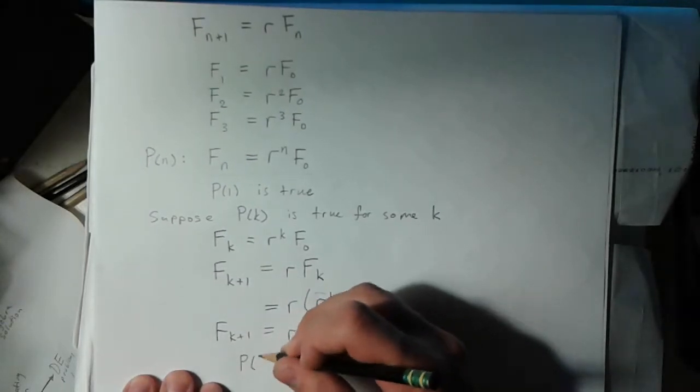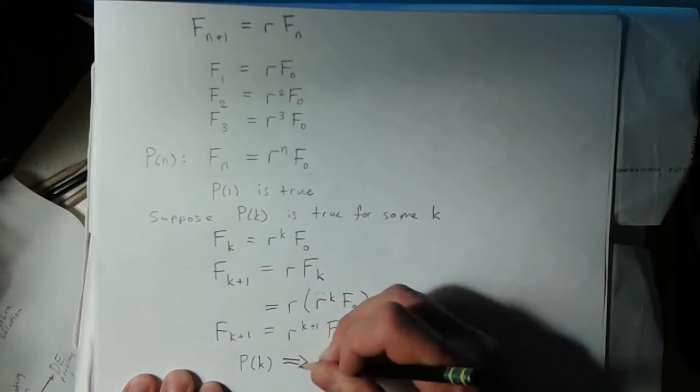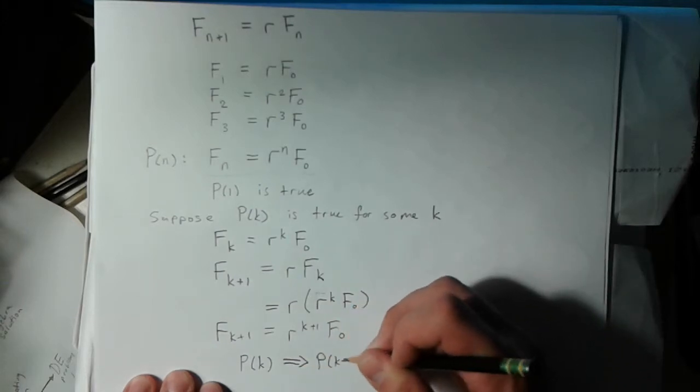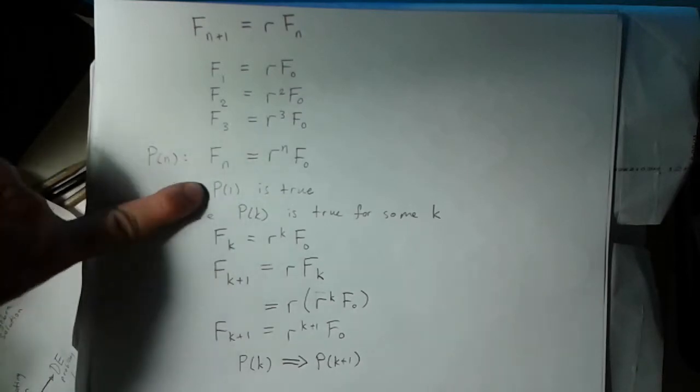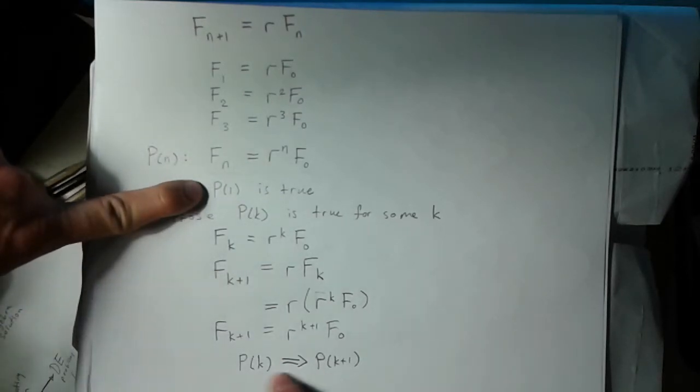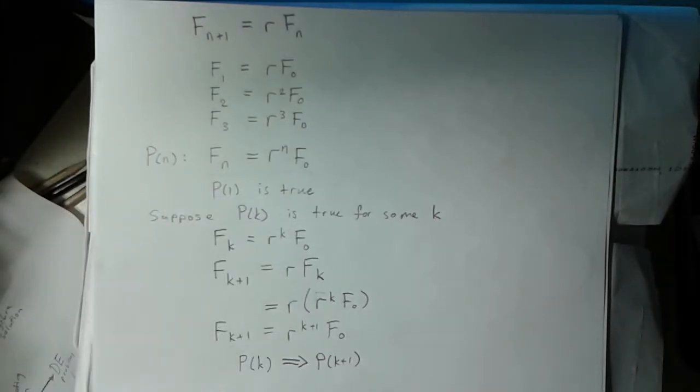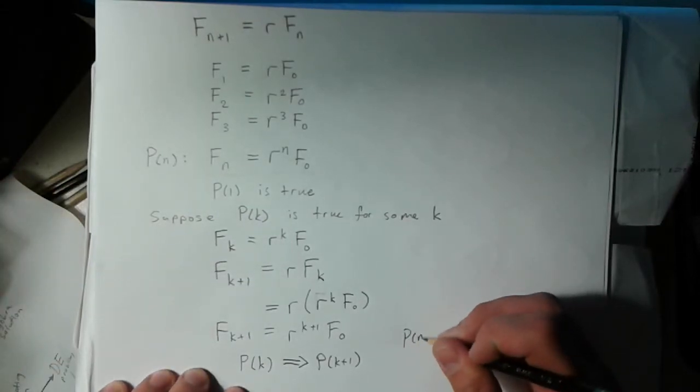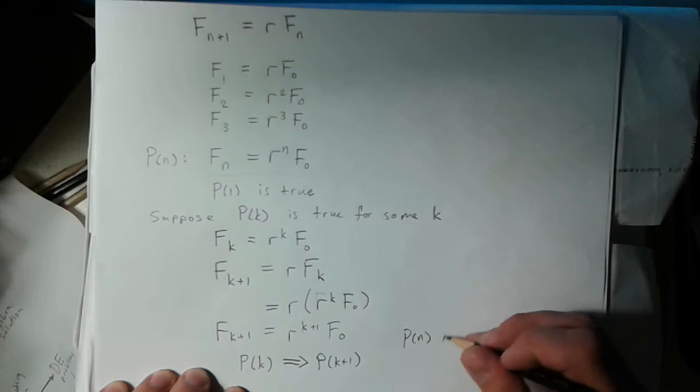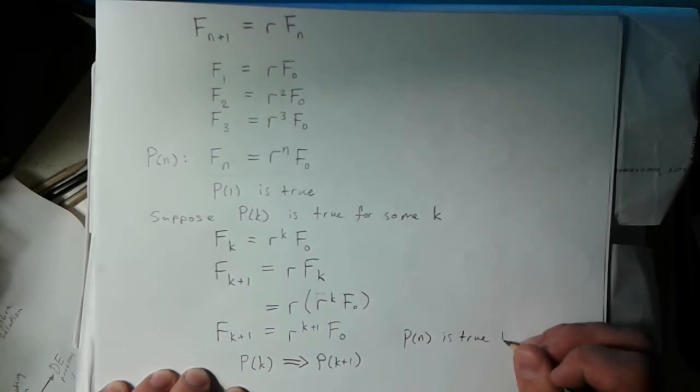In other words, the statement P(k) implies P(k+1). Since P(1) was true, that means P(2) must be true by this statement, which means P(3), and so on. In other words, P(n) must be true for all n.